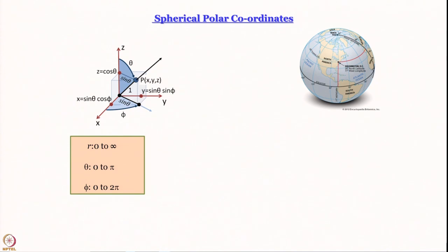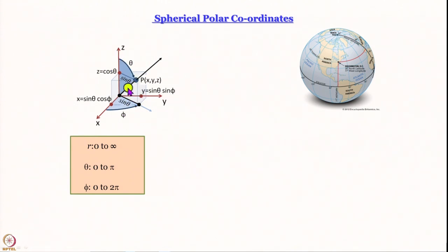Another thing we need is spherical polar coordinates — a departure from x, y, z Cartesian coordinates. Since rotation is essentially a change of angle, it is more convenient to describe the same three-dimensional space using r, θ, and φ. Please note it is the same space. For those who may be rusty on spherical polar coordinates, we will go through it quickly. Looking at this diagram, I have drawn the three Cartesian axes x, y, and z, and we will now define the three coordinates r, θ, and φ.